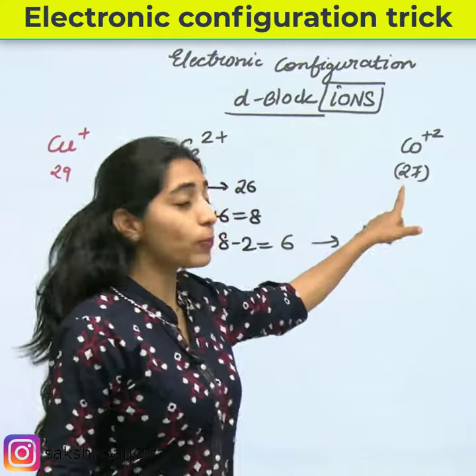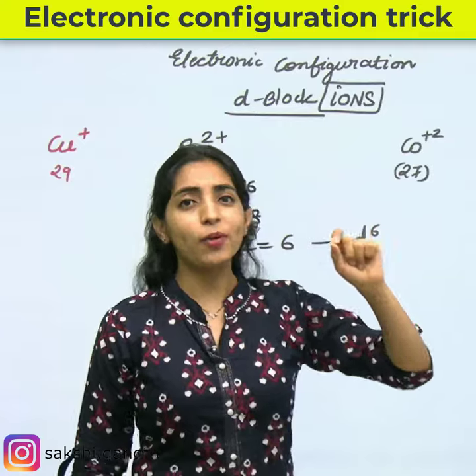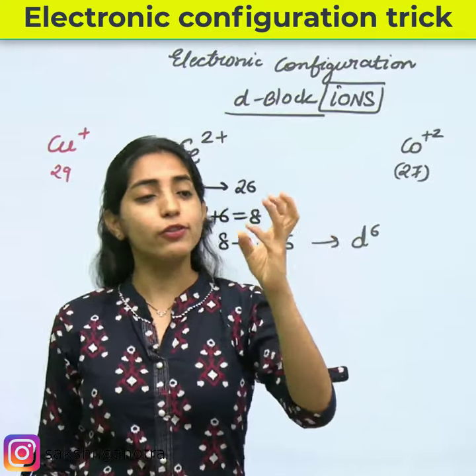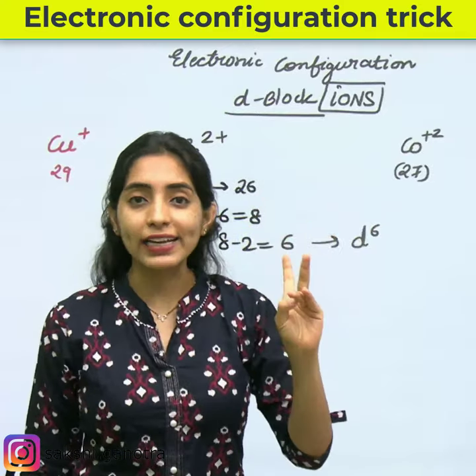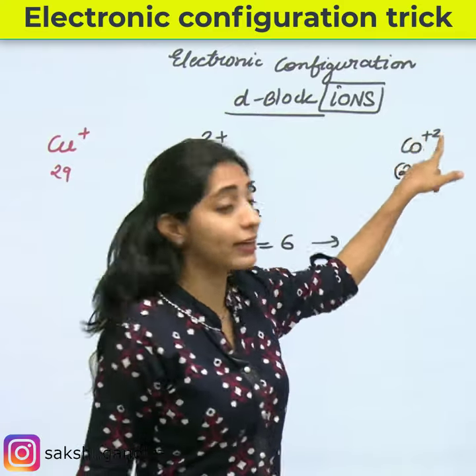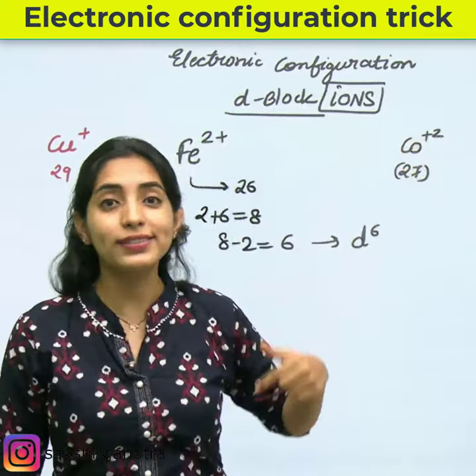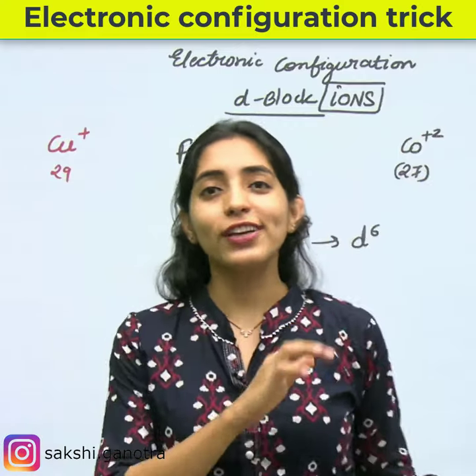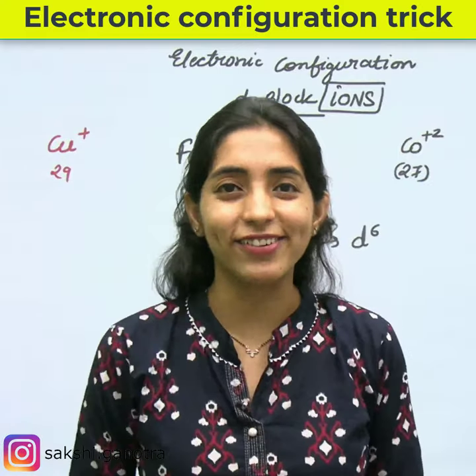Someone asks about Co²⁺. Cobalt's atomic number is 27, so 2 plus 7 equals 9. Subtract the charge of 2 from 9, giving 7. So its configuration is D7.